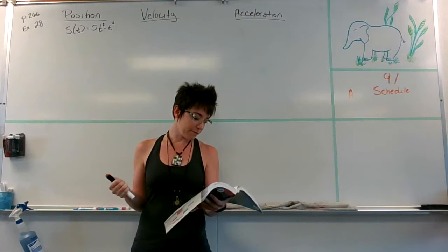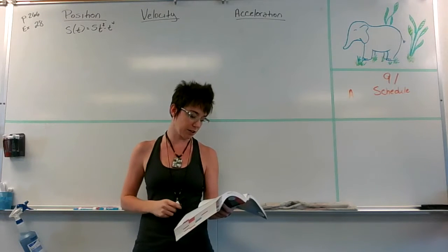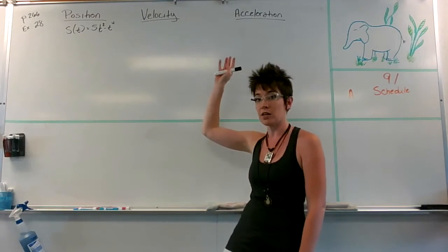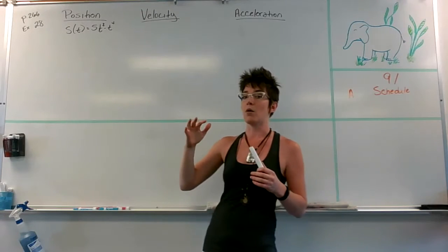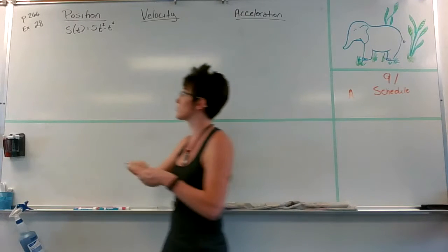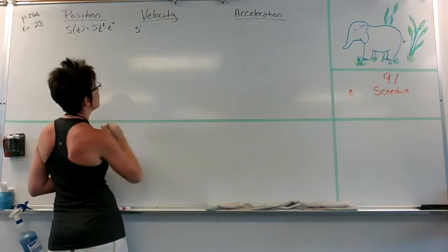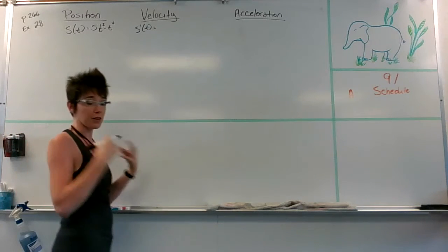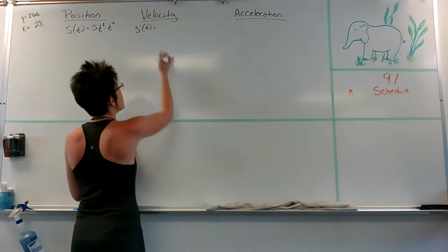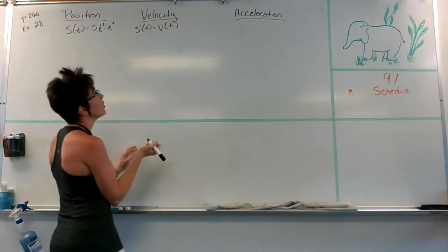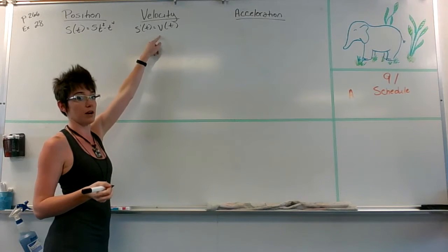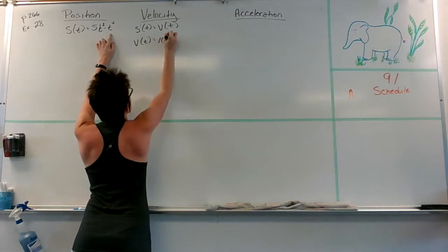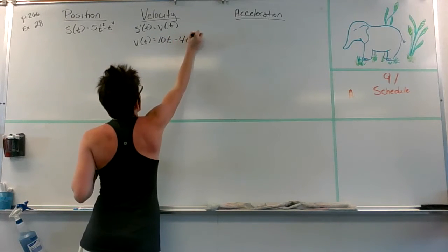The first part says find the position, velocity, and acceleration of the particle after one second. I've organized my space as position, velocity, and acceleration to keep a clear understanding. If I find the derivative of position — s prime — that tells me how quickly my position changes, which is literally velocity. So that first derivative is your velocity function, v of t. My velocity function winds up being something like 10t minus 4t cubed.